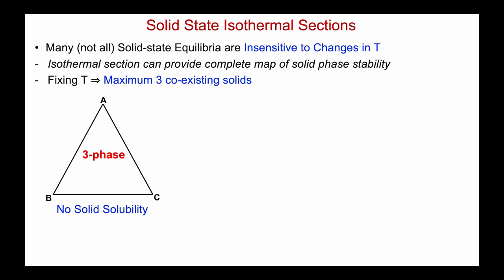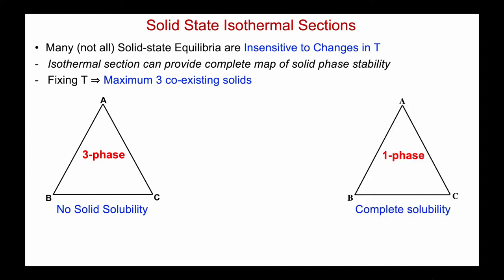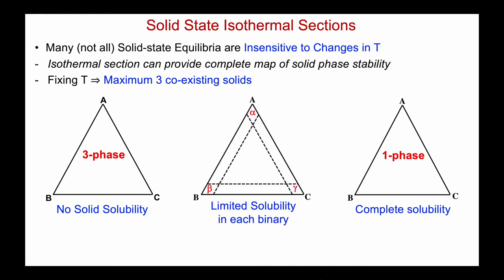The first case we just looked at is where there is no mutual solid solubility at all between the three components, so everywhere within the triangle we have three phases. The other extreme is where the three components are completely soluble, and therefore anywhere within the triangle for any composition, we'll just have a single-phase solid solution.